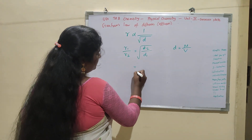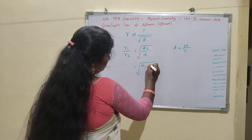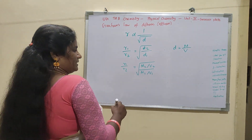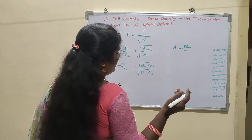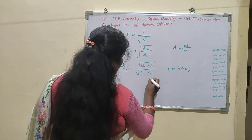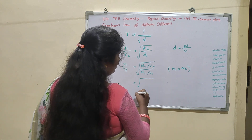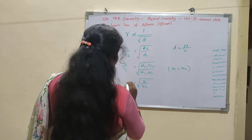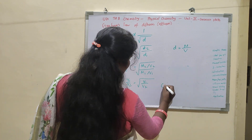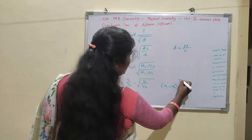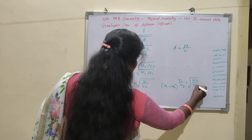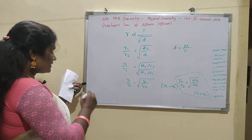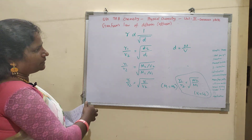When you apply the mass by volume formula, if both gases have the same volume — that is V1 equals V2 — then R1 by R2 equals square root of M2 by M1, where M1 and M2 are the molecular masses. When the volumes are equal, we get this format.